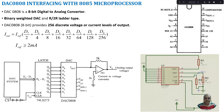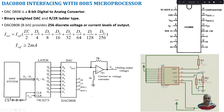The basic conversion of binary data into an analog value uses this formula: Iout, the output current from the DAC, equals the reference current multiplied by (D7/2 + D6/4 + D5/8 + D4/16 + D3/32 + D2/64 + D1/128 + D0/256), where D0 is the LSB and D7 is the MSB.